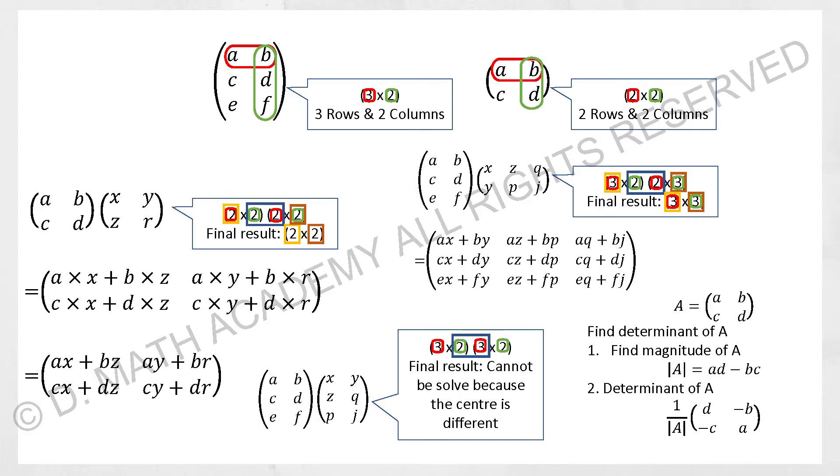So just take A multiplied by X plus B multiplied by Z. Repeat the same thing, A multiplied by Y plus B multiplied by R. For the one at the bottom, repeat the same. Then you will get your final results as shown over there.